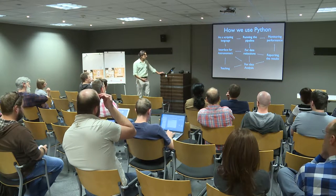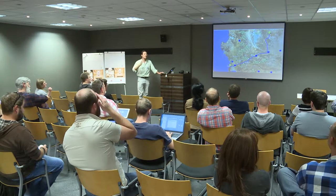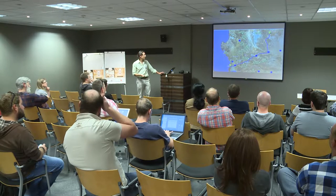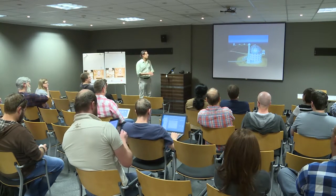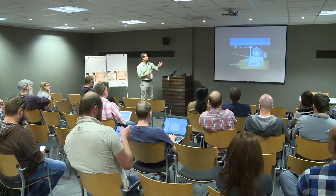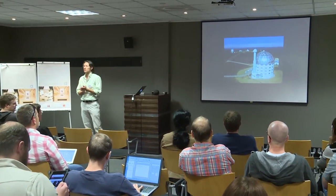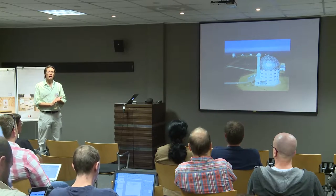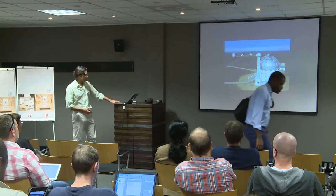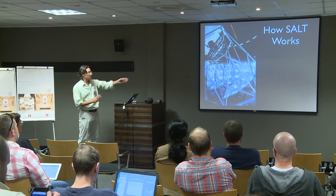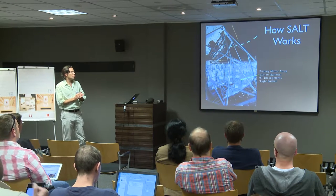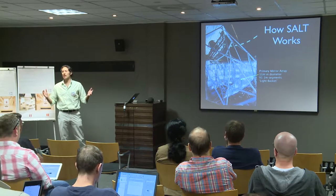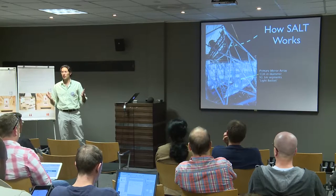The project we're using Python for is the Southern African Large Telescope. SALT is located in Sutherland, about four and a half hours northeast of Cape Town, in a very vast and remote area — great for dark skies. This is the Southern African Astronomical Observatory site. The main optical facility is the Southern African Large Telescope, a 10-meter diameter telescope. The primary mirror is actually 11 meters in diameter, made up of 91 one-meter segments in a spherical shape, acting as a giant light bucket.